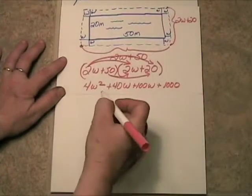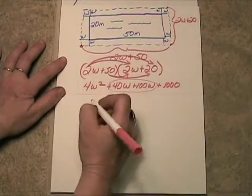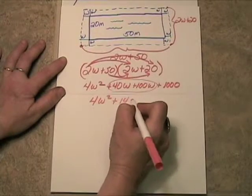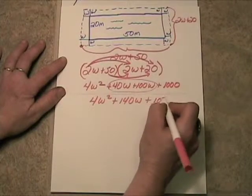Alright, now we simply add like terms. The only terms that can be added are these two center terms. And we'll get four w squared plus 140 w plus 1,000.